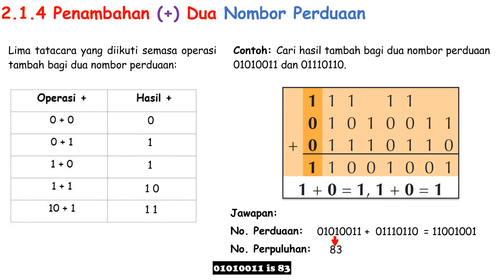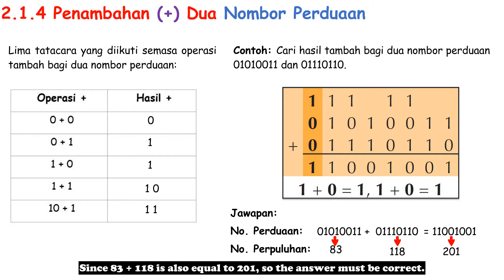01010011 is 83; 01110110 is 118; and 11001001 is 201. Since 83 plus 118 also equals 201, the answer must be correct.